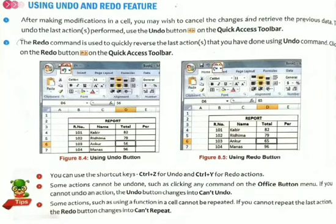So here we are going to look at the undo and redo feature. Undo means we cancel the last modification or the last action that we have performed. So if we have done any changes in the previous data, we can undo that by clicking on the undo button that is present on our quick access toolbar.